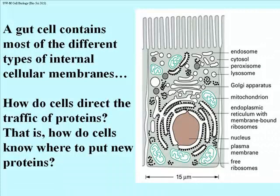Let's look at an illustration of a gut endothelial cell, because it has most of the kinds of internal membranes found in cells. Cells that differentiate may not do a lot of secretion, so they might not have much RER and Golgi, but gut cells — which secrete enzymes into the gut — have all of the membranes. All cells have mitochondria, and all eukaryotic cells have a nucleus. How does a cell know to put the right proteins in the right places — cytosol, RER, lysosome, peroxisome, or other organelles? This module will begin to explain that.